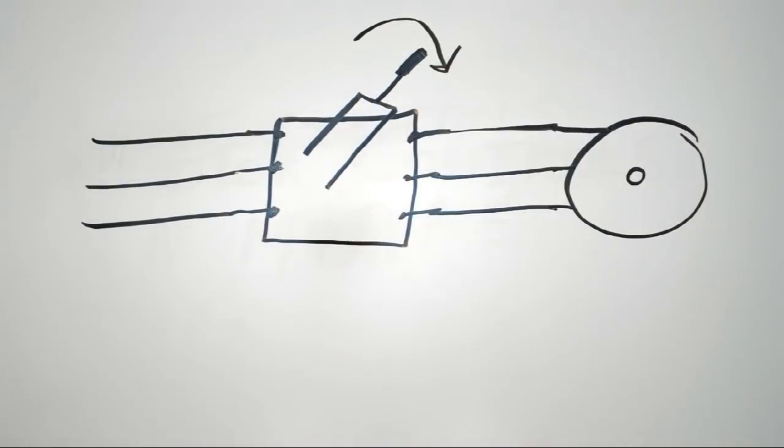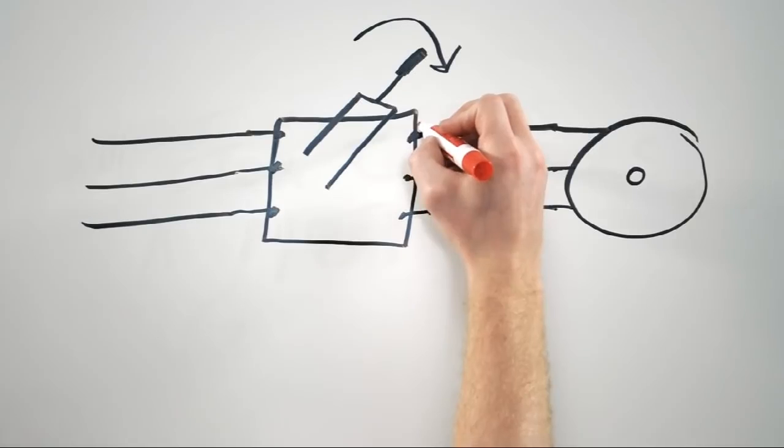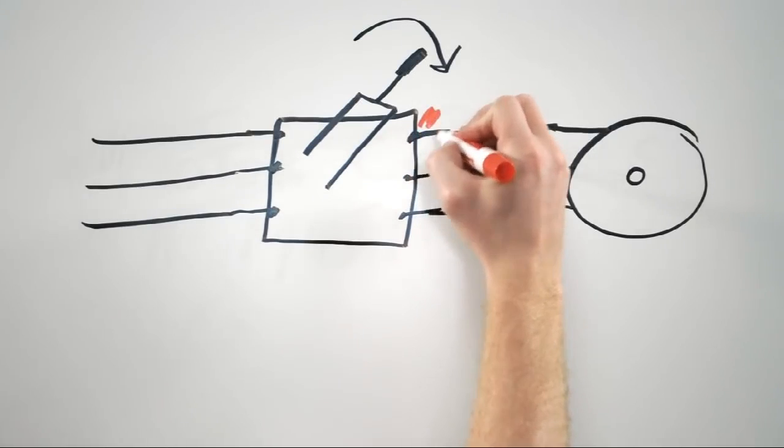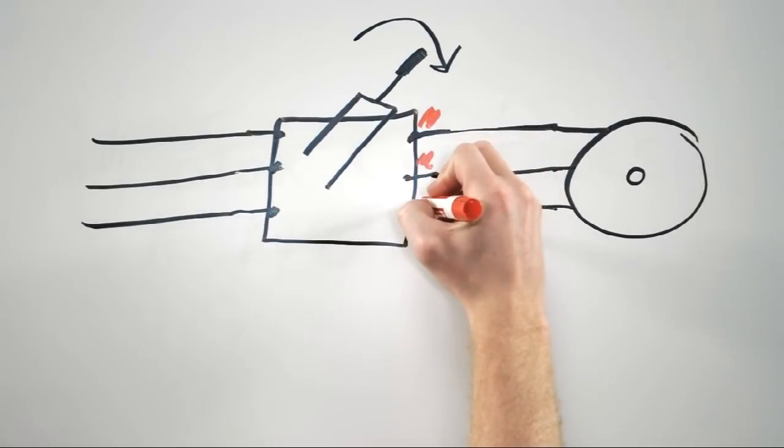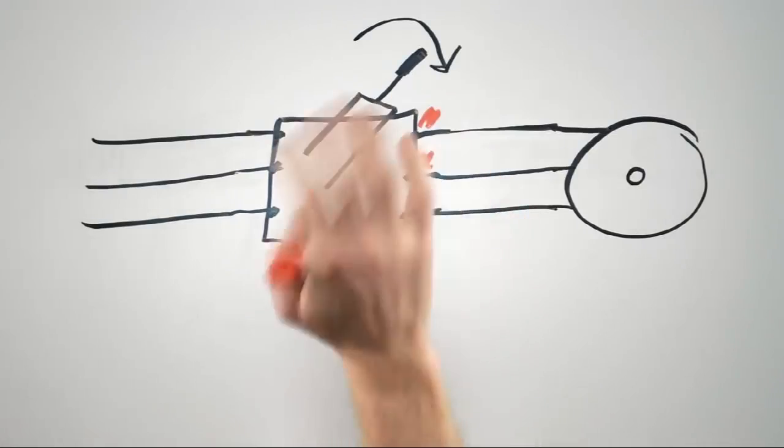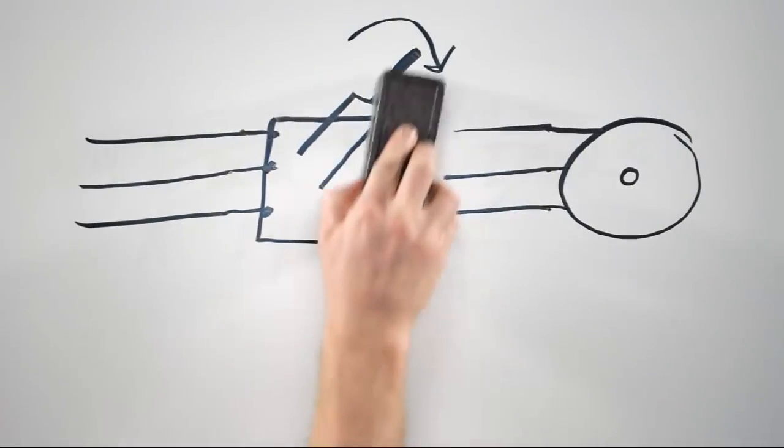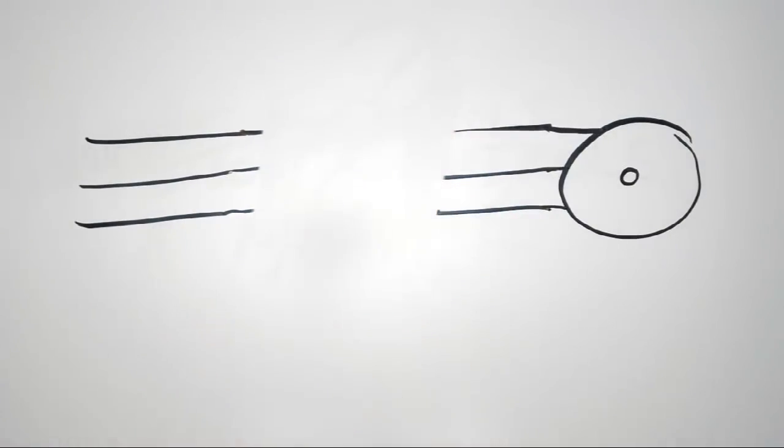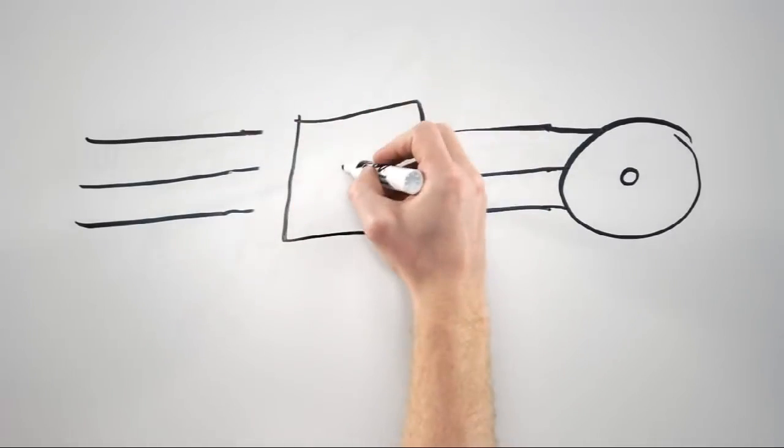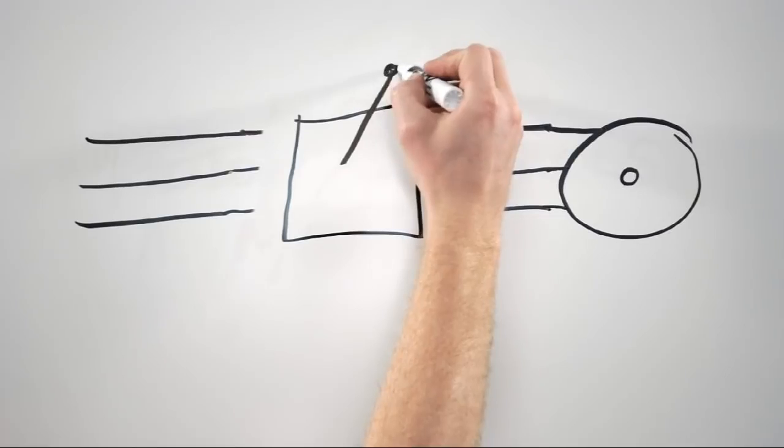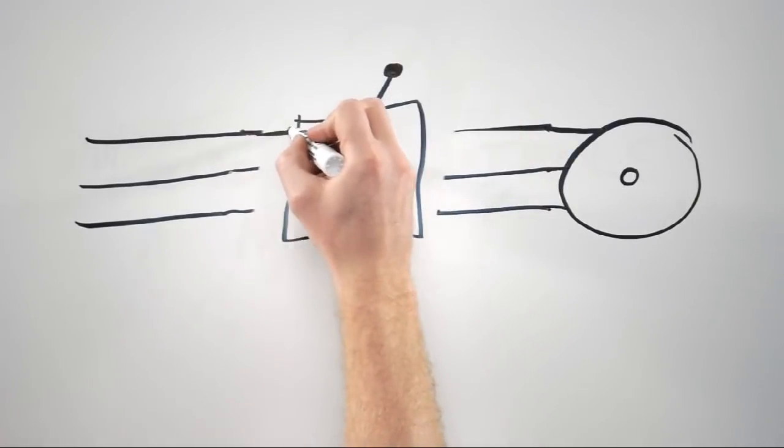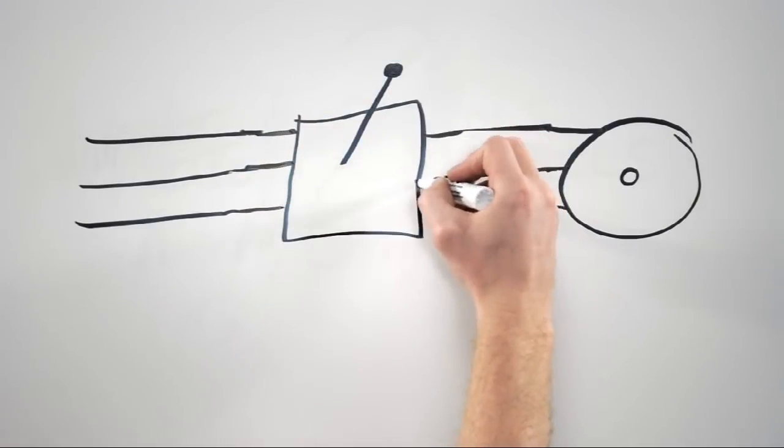But this wasn't particularly safe for the operator since when the switch was almost closed, there were arcs formed at the contacts which could injure the operator. So they said scratch that, let's just put the switch inside of an enclosure to protect the operator. They put a handle on the outside and now they could turn on and off the motor and the arcs were contained inside the box.